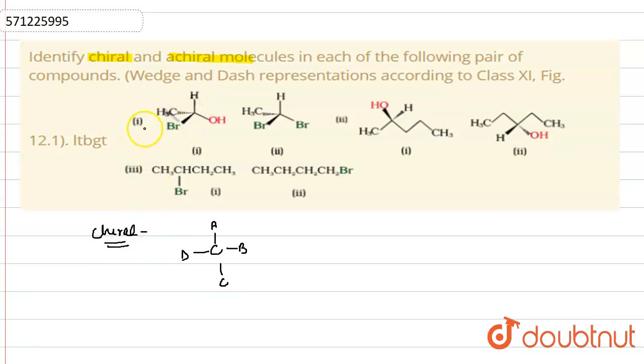So if we take the example of the first group, here we can see that we have hydrogen, CH3 group, bromine and OH attached. That's why all four groups are different. That's why it is a chiral carbon. So this will be our chiral carbon.